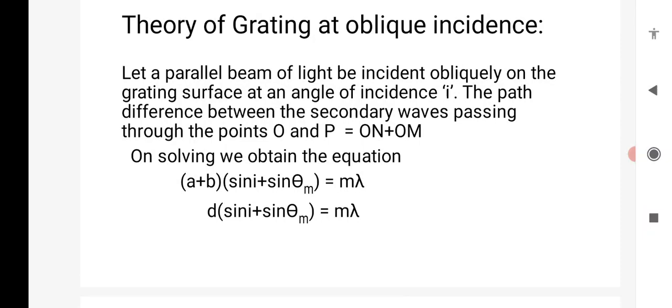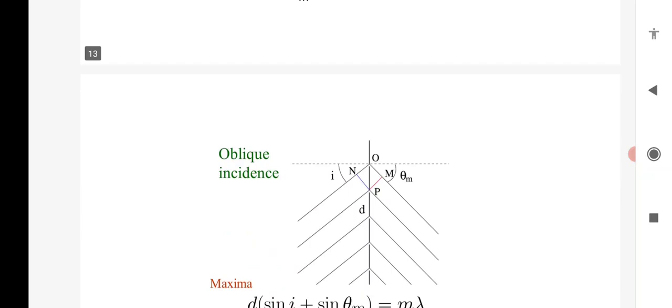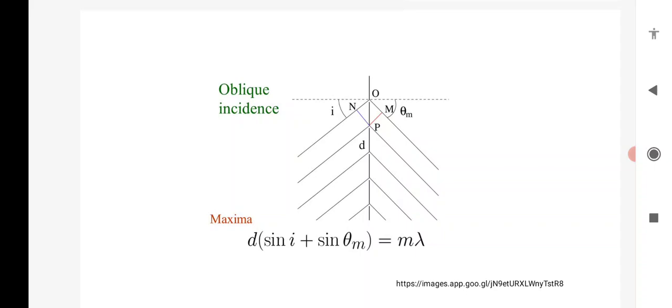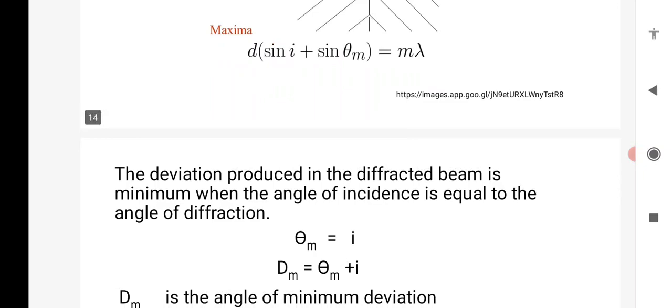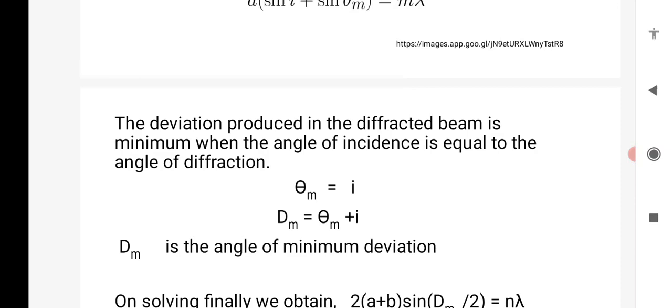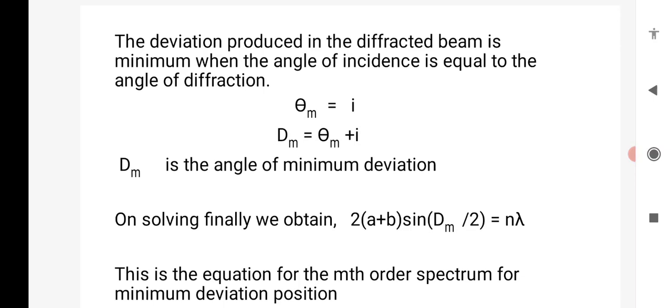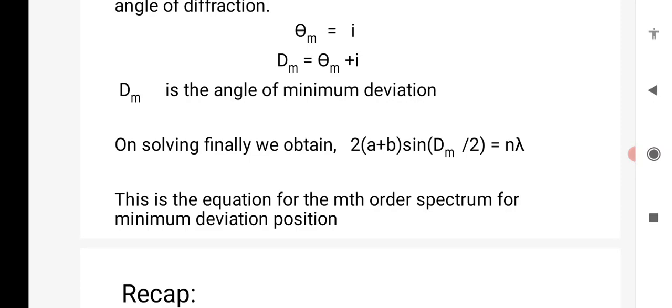Next, the theory of grating at oblique incidence. Consider the path difference between the secondary waves passing through points O and P equals ON plus OM. Then we obtain the equation A plus B of sin i plus sin theta equals M lambda, or D of sin i plus sin theta equals M lambda. This is the image related to oblique incidence. If theta equals i, then Dm equals theta plus i. We know that Dm is the minimum angle of deviation. On solving, finally we obtain 2 of A plus B sin Dm by 2 equals n lambda. This is the equation for the mth order spectrum for minimum deviation position.